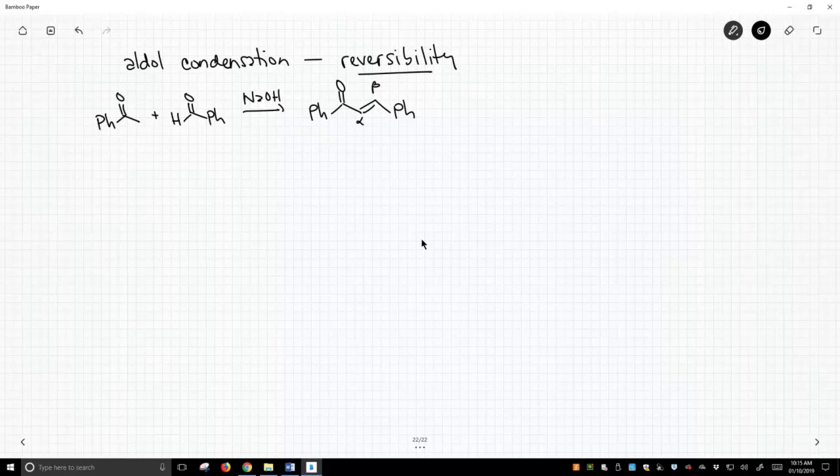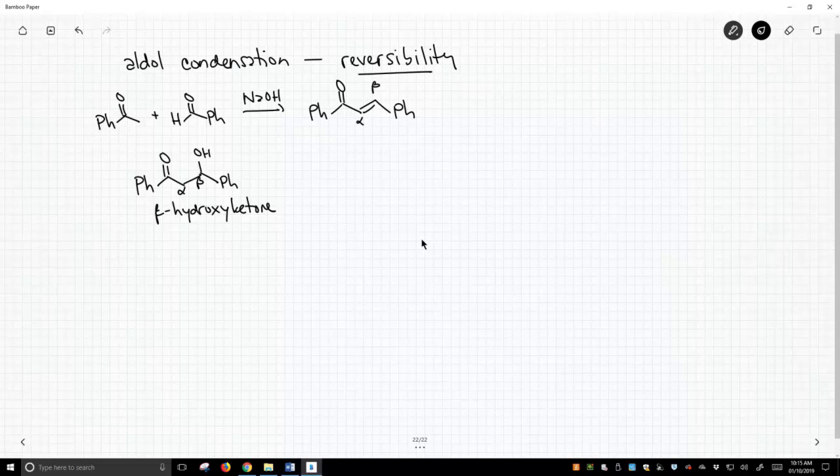So let's look specifically at some of the last steps in this reaction. At some point in this reaction, we are going to form a beta-hydroxy ketone. And there's beta. The hydroxy is in the beta position. Beta to what? Beta to the ketone.